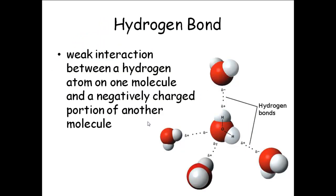One hydrogen bond — one attraction between the oxygen on one water molecule and the hydrogen on another — is very weak. It's the weakest type of chemical bond we'll talk about. Ranking bonds by strength: weakest is hydrogen, next is ionic, and covalent is the strongest. A double covalent is stronger than a single, and a triple is stronger than a double.